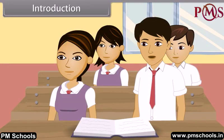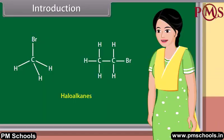Ma'am, what are haloalkanes? Haloalkanes are the chemical compounds in which one or more of the hydrogen atoms in an alkane have been replaced by a halogen atom.